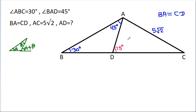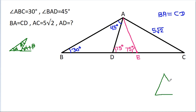If we draw AE, where E is a point such that this angle is also 75 degrees, then in any triangle ABC, if two angles are equal, then AB will be equal to AC. So here, AD will be equal to AE.